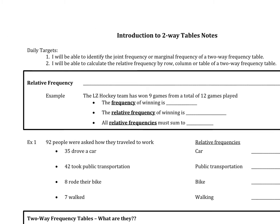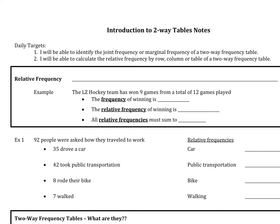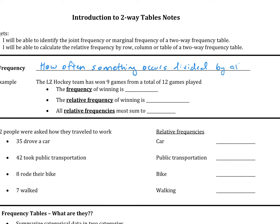So let's start with: what is the definition of relative frequency? A relative frequency is how often something occurs divided by all outcomes. When we talk about relative frequency, we're really looking at the percentage of a situation. For example, if an LZ hockey team won nine games from a total of 12 games, the frequency would be nine. The relative frequency would be nine twelfths, which simplifies to three-fourths, which is 0.75, or 75%.